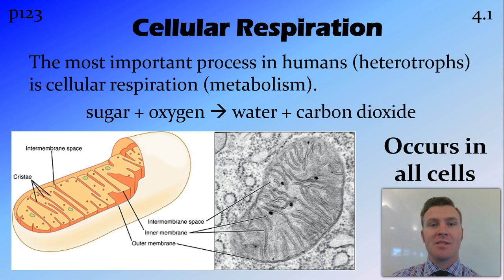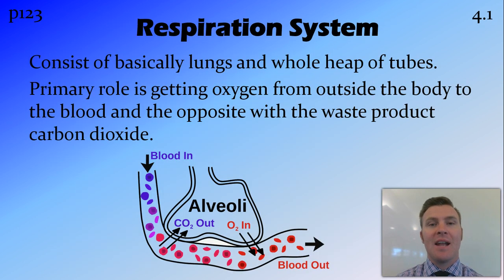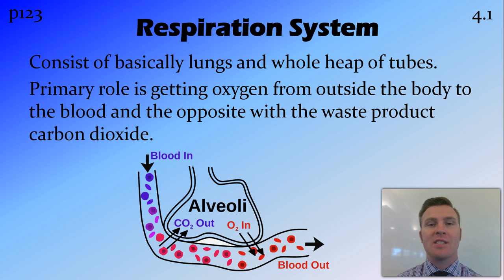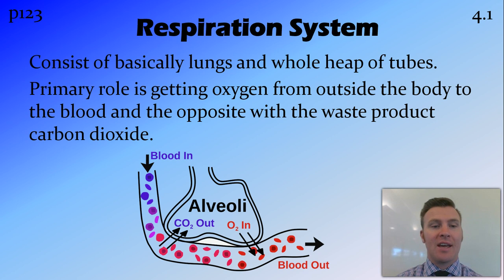The first system we're going to look at is the respiratory system. Do not get confused between the respiratory system — which basically consists of the lungs and a whole heap of tubes, some inside the lungs and some outside — and cellular respiration, which is the metabolism that happens inside the cell. These are two different things.